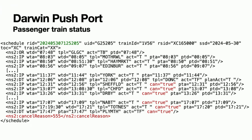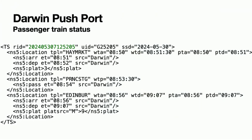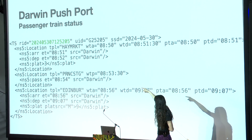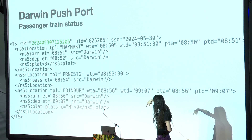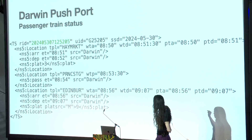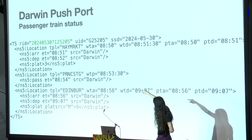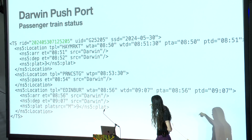You have schedule messages for the schedules themselves, but for the actual running data there's what's called a train status message, which tells you for a few specific locations what the current estimated time is. When a train actually does something, you'll get a status message with the actual time it happened. So we can see this train is now estimated to get to Haymarket at 8:51 — it was scheduled for 8:50 — and there are updated times for the next few stations after that.